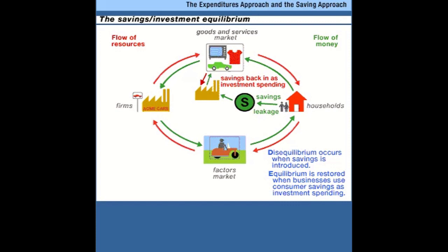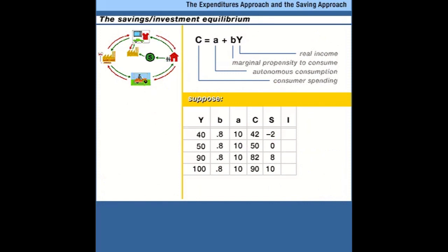In our simple story we had zero savings, so in equilibrium investment spending would also have to equal zero. Now let's go back to our numbers and suppose we have savings in the economy — something for businesses to borrow to conduct investment purchases. Suppose businesses want to spend 10: investment spending planned at 10 at any level of income. The only equilibrium is one where consumers reduce their consumption spending relative to income by enough to create savings for businesses to use. If businesses want 10 worth of investment spending, there has to be 10 worth of savings.